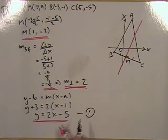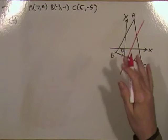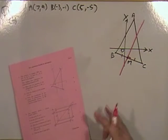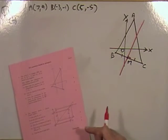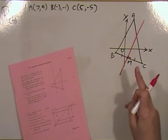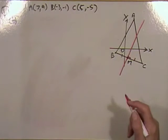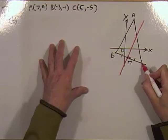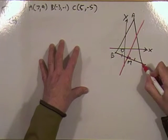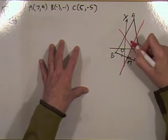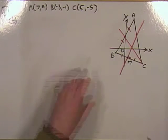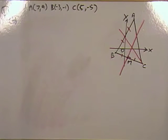That was the first bit done. The second bit says find the point of intersection. The perpendicular bisector is done, now I need the median from C — the line that goes from C to the middle of the opposite side. That's the line that cuts it in the middle but not necessarily at right angles.